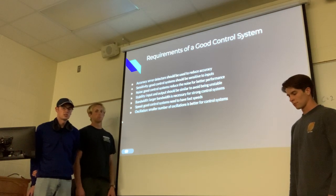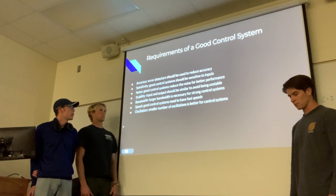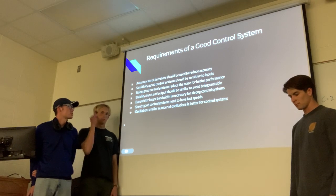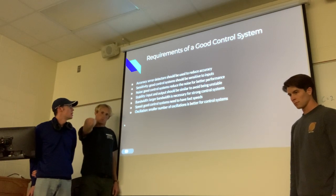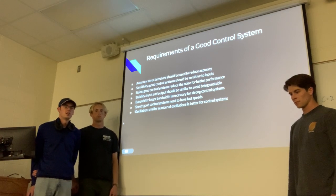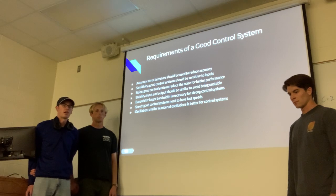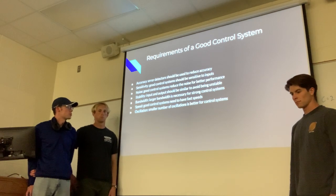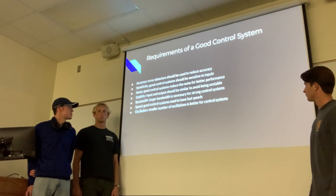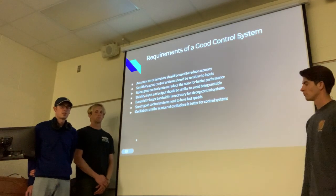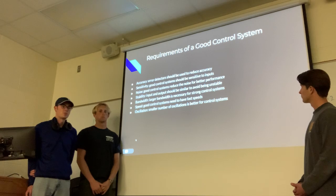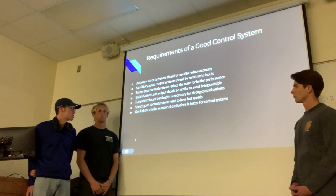Some requirements of a good control system include good accuracy — error detectors can be used to improve accuracy. Sensitivity: a good control system should be sensitive to inputs. It should also reduce noise for better performance, improving accuracy and reducing background noise. The input and output should be similar to avoid being unstable. A larger bandwidth should be used for stronger control systems, and good control systems need to have fast speeds in order to have good bandwidth and should have a small number of oscillations.